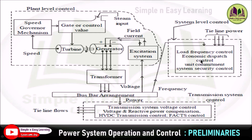The next one is economic dispatch control. The power system has several power plants such as thermal, hydro, nuclear, wind, solar, etc., and each power plant has several generating units. Since load demand on the power system varies from time to time, the total demand is met by generating units in different power plants. The main purpose of economic dispatch control is to minimize the overall fuel cost of the system to supply the load demand. This is achieved by proper economic load scheduling of different generators, applying economic scheduling of plant output for a given system load with and without considering transmission losses.